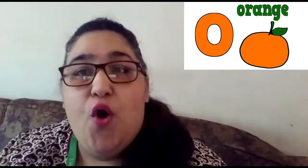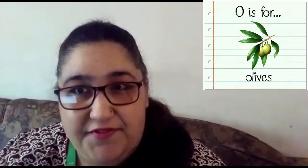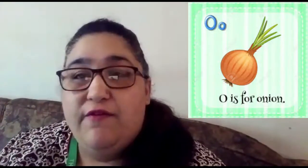The next letter is letter O. O says O. This is the sound of O. Now, let's see a few things that begin with letter O. O for orange, O for olive, O for onion, O for ostrich, O for otter.